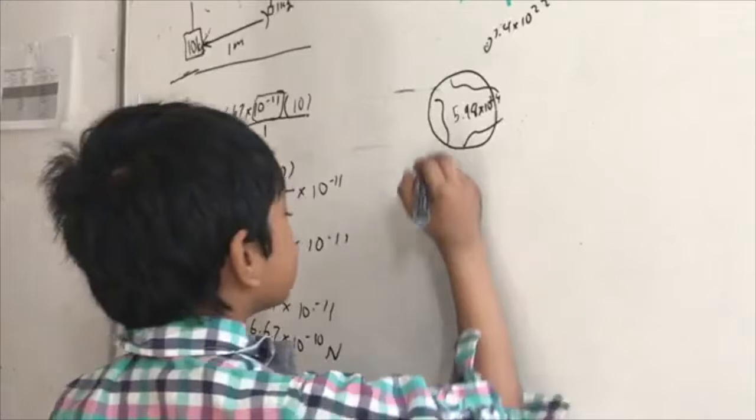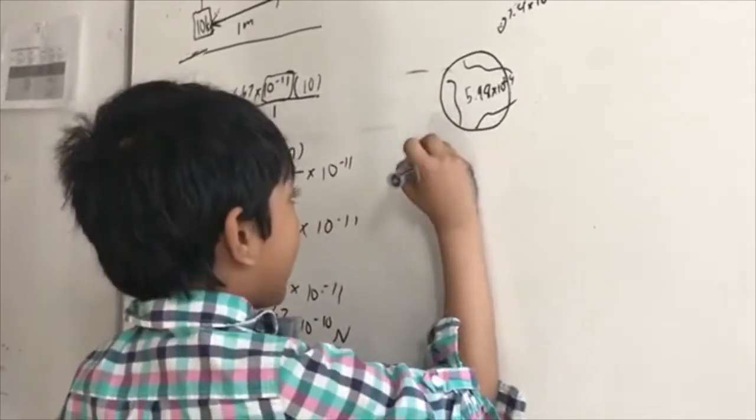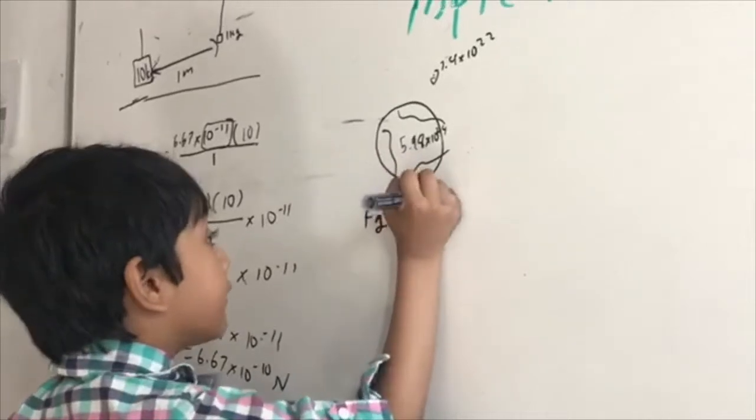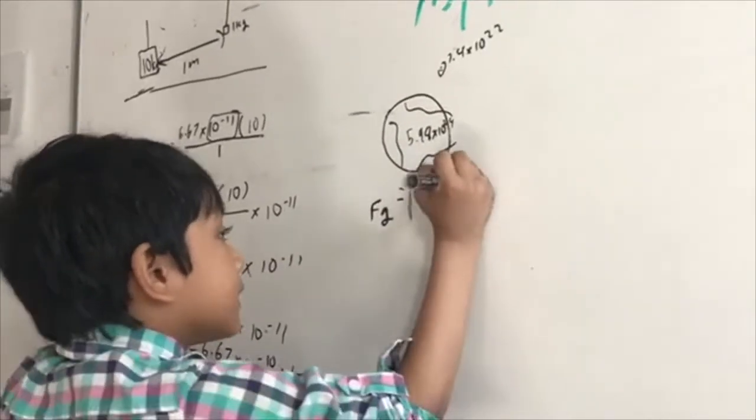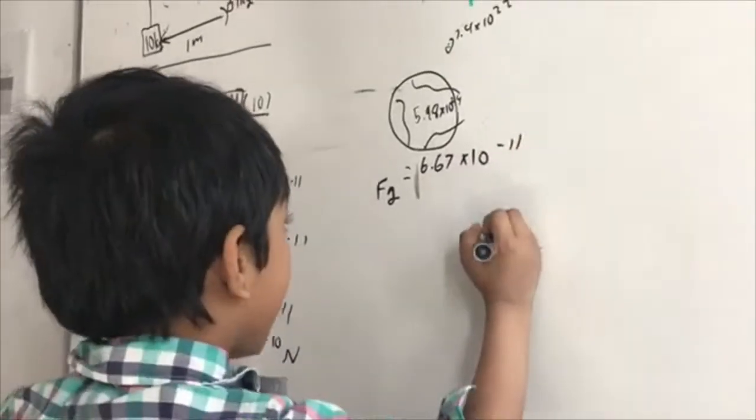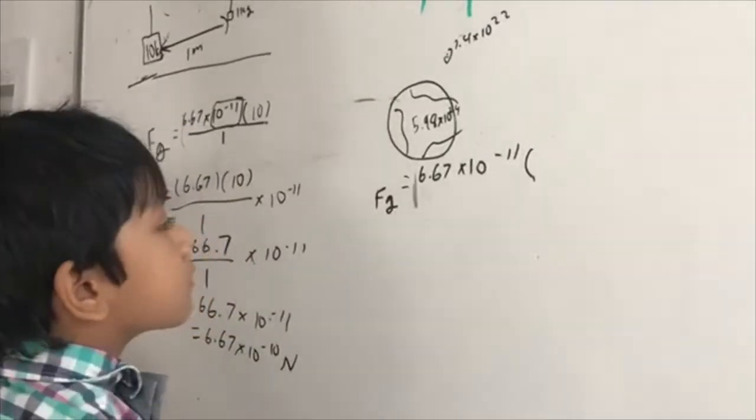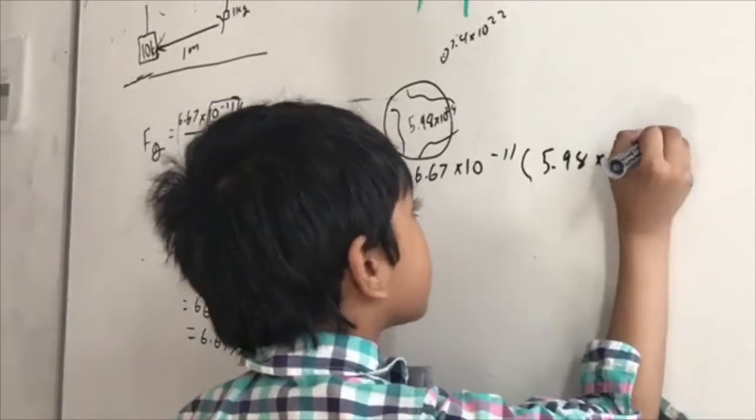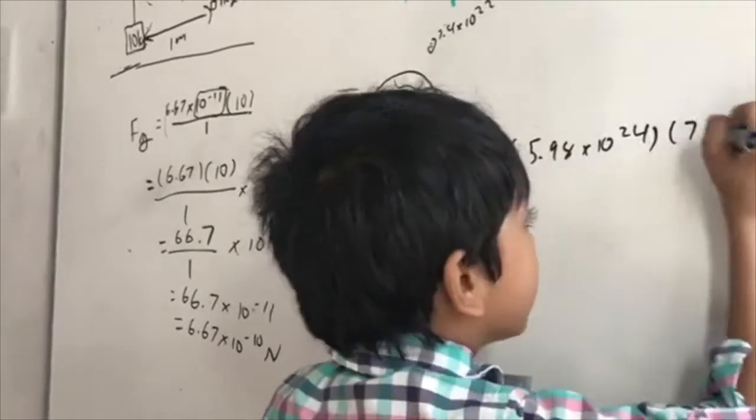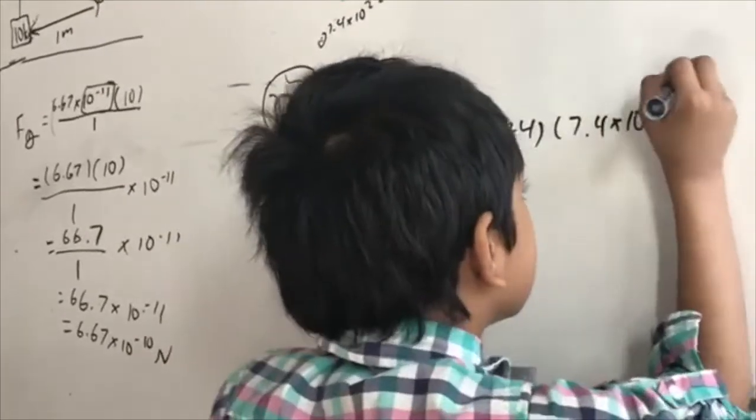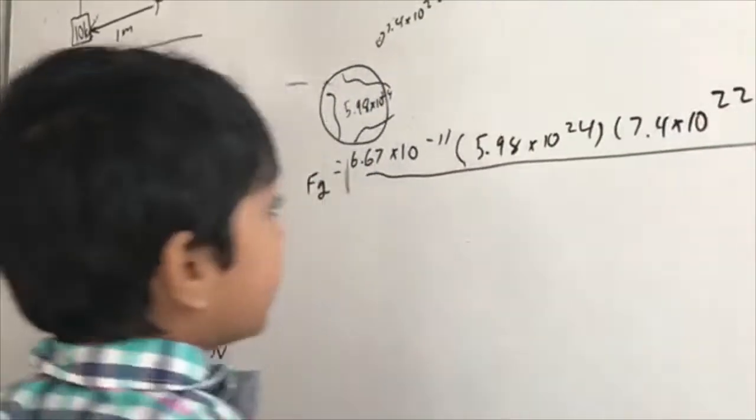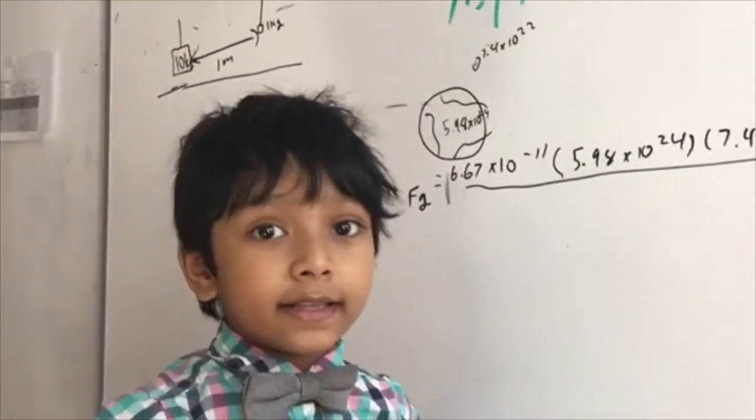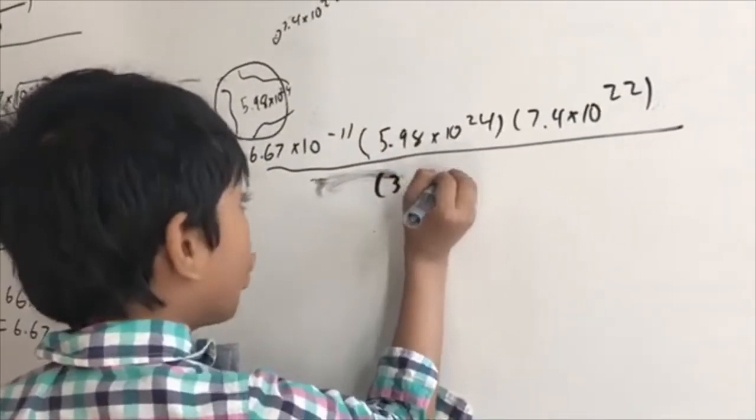Fg is equal to the force of gravity once again. So, 6.67 times 10 raised to the negative 11 multiplied by the two masses. So, 5.98 times 10 raised to the 24th multiplied by 7.4 times 10 raised to the 22nd. Divided by. Now, if you don't have the physics reference table, you're going to get the distance wrong. It's a whole square.